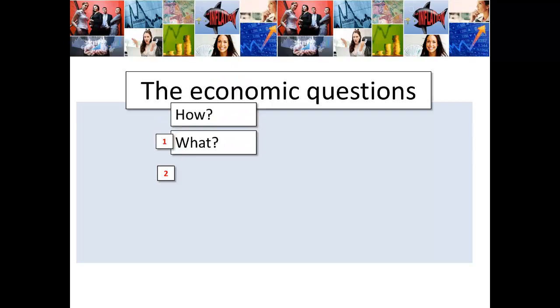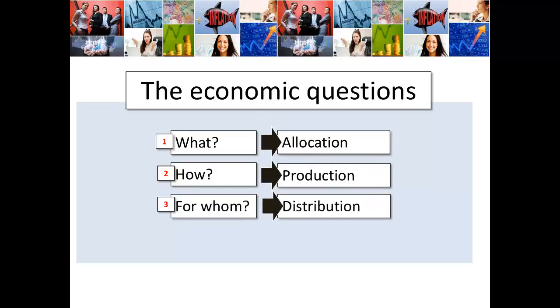The 'what' question is about allocation. The 'how' question is about production. The 'for whom' question is about distribution. So what will we produce? We've got scarce resources in the economy — what are we going to allocate these resources to producing? And once we've decided how to allocate our resources, how are we going to use our production? Are we going to use lots of humans and generate lots of employment, or are we going to use lots of capital equipment and machines to generate lots of profit?